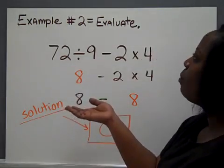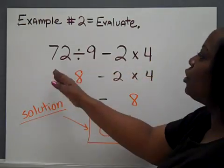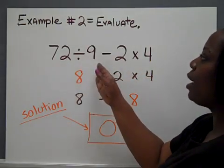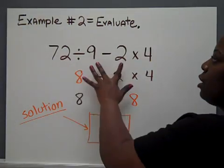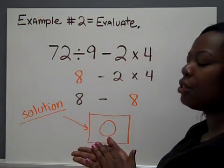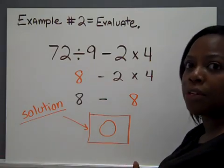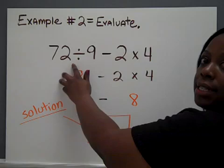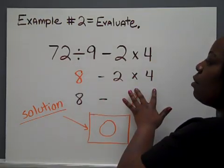Here is another example using order of operations on a numerical expression. The expression says 72 divided by 9 minus 2 times 4. Division and multiplication is what we have first, but remember, you do whichever one between the two comes first in the expression. In this case, it's division, which will give us a solution of 8, copy the rest of the problem.